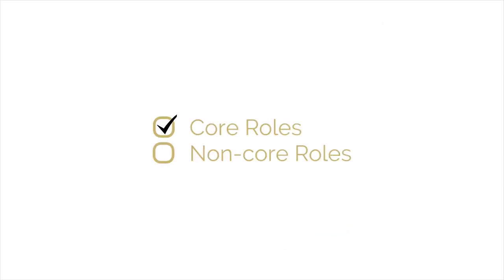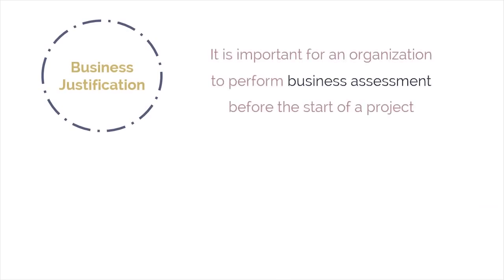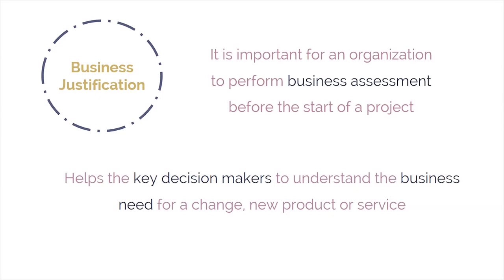Now that we have seen the core and non-core roles in a Scrum-controlled project, let's discuss another key Scrum aspect: business justification. It's important for an organization to perform a proper business assessment prior to starting any project. This helps key decision makers understand the business need for change or for a new product or service, the justification for moving forward with a project, and its viability. Business justification in Scrum is based on the concept of value-driven delivery.